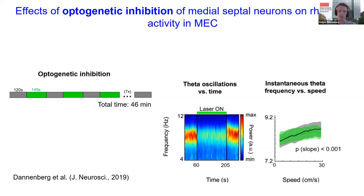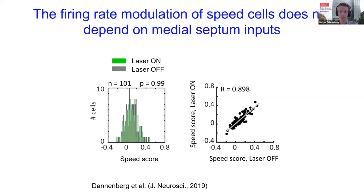Theta power returns to baseline levels after the end of laser stimulation. The slope of the local field potential theta frequency versus running speed relationship is also reduced during inhibition of medial septal activity. Taken together, this data demonstrates that the medial septum is important for a theta oscillatory speed signal — but is the medial septum also required for a speed signal by firing rate?